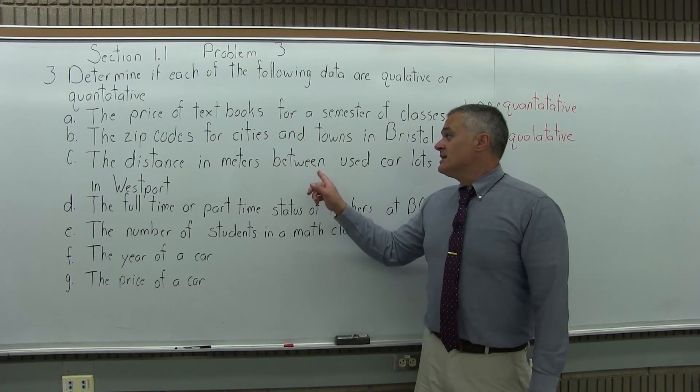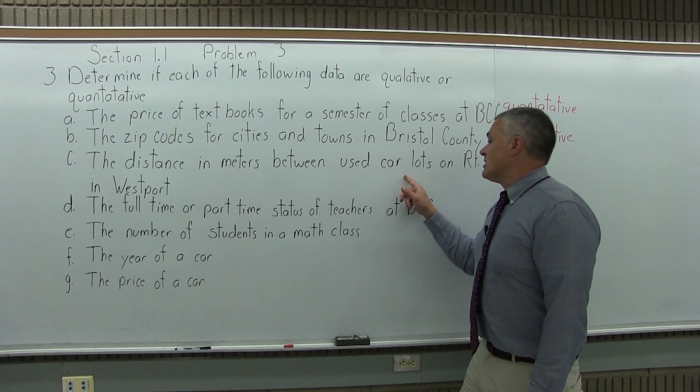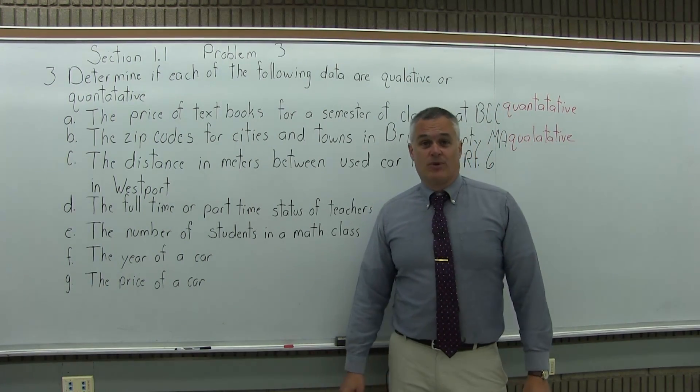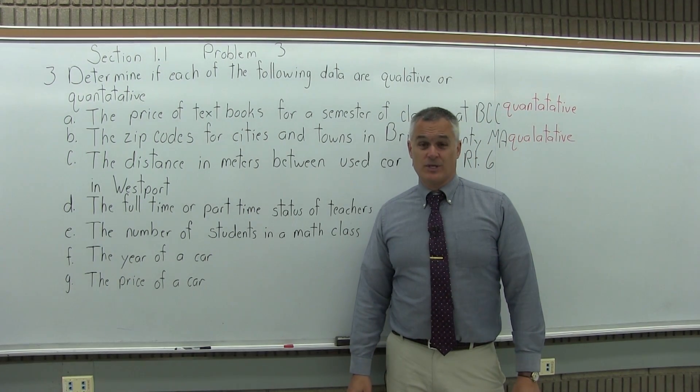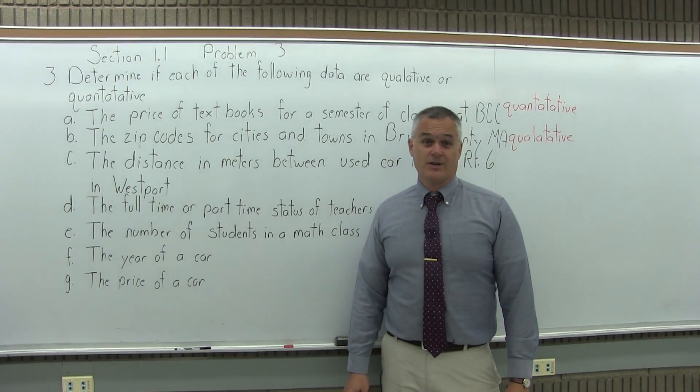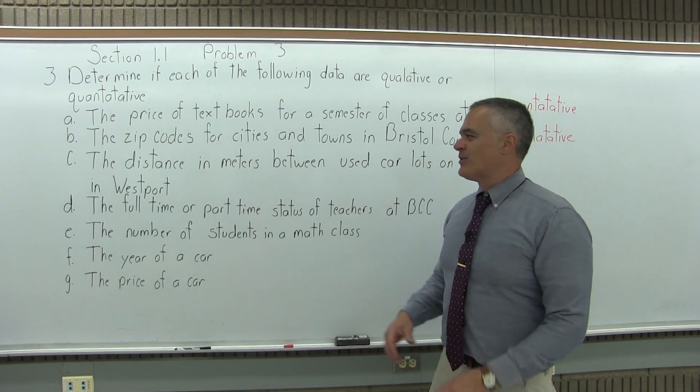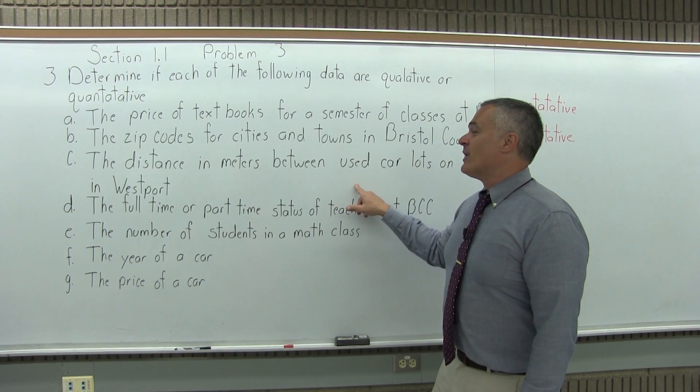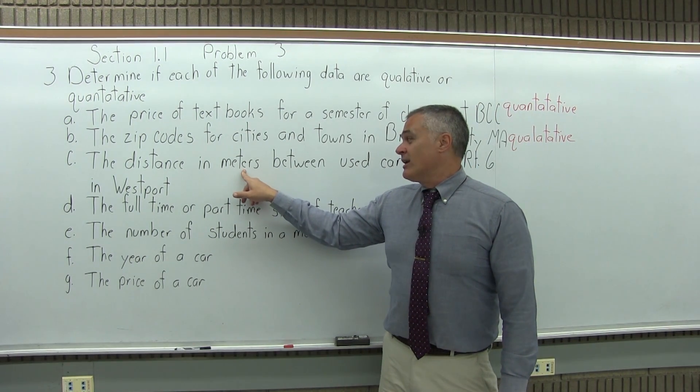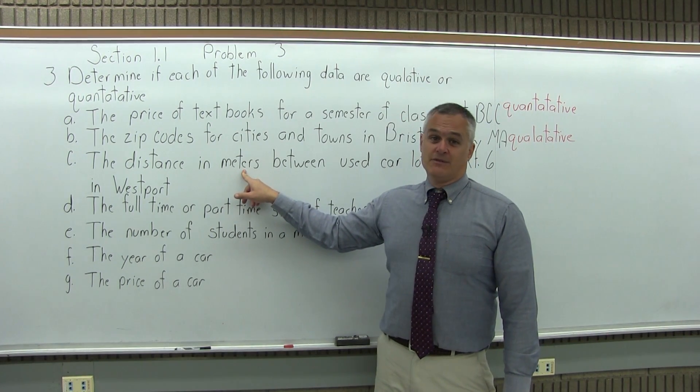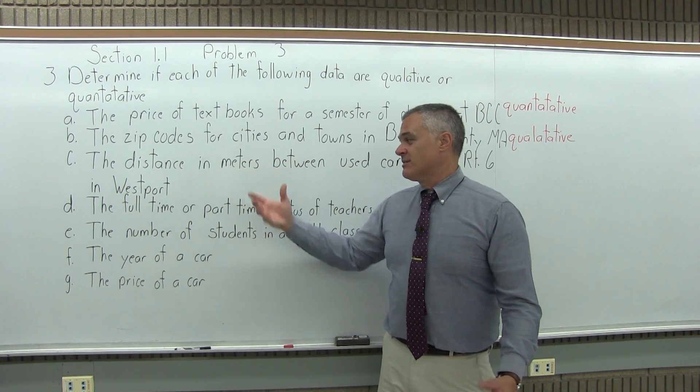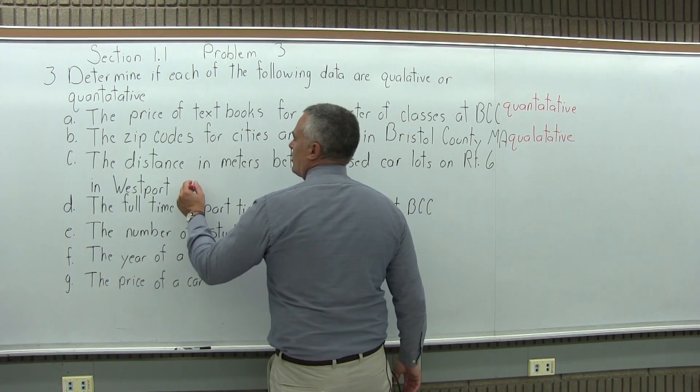C, the distance in meters between used car lots on Route 6 in Westport. So if you've been through Route 6 in Westport, you'll know there's a lot of used car dealerships. There's got to be dozens of them. They're very close together. Some of them are right next to each other. But anyway, the number you get will measure a quantity of something. So it is a number, it's going to be a quantity, so C is quantitative.